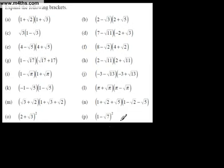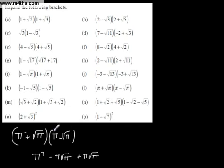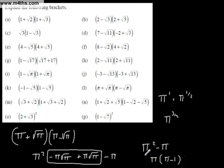Let's do a couple of binomial expansions with surds. Looking at (π + √π)(π − √π): π times π is π²; π times negative √π gives minus π√π; then plus π√π; and finally, √π times negative √π is minus π. Those middle terms cancel, so we're left with π² minus π. Taking out a common factor, we get π(π − 1). That works out quite nicely.